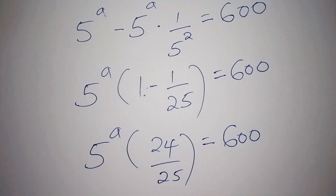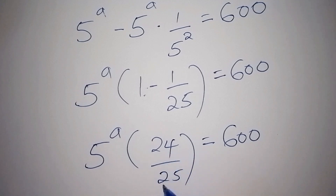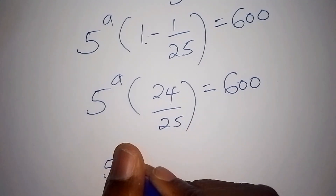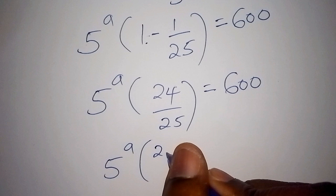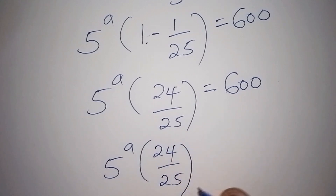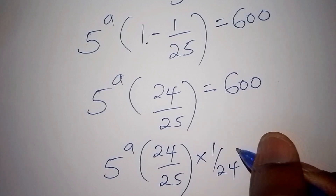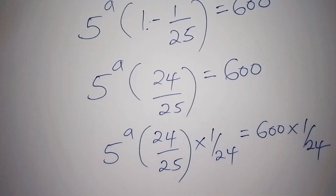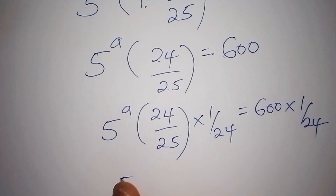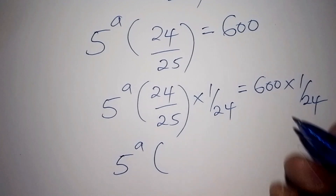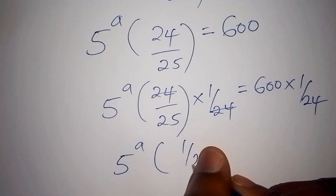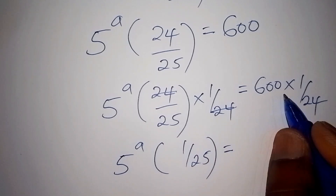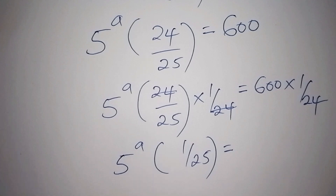Our next step is to multiply both sides by 1 over 24, so we remain with 1 over 25. We have 5 to the power of a, into bracket, 24 over 25, multiplied by 1 over 24 on both sides, equals 600 times 1 over 24. The 24s cancel, leaving 5^a times 1 over 25 equals 25.